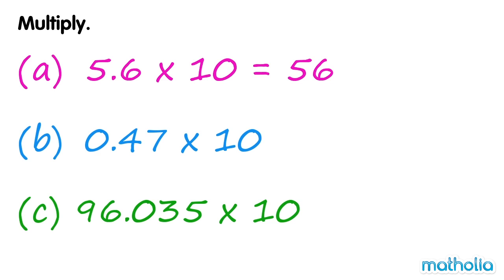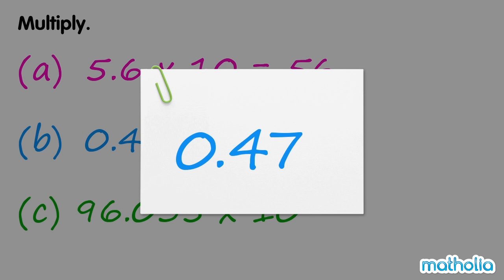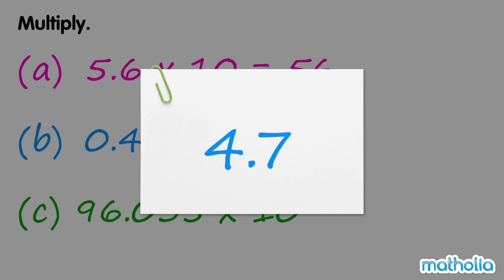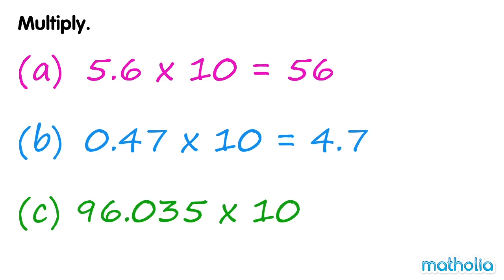b. Find 0.47 times 10. In 0.47, shifting the decimal point one place to the right gives us 4.7. So 0.47 times 10 equals 4.7.